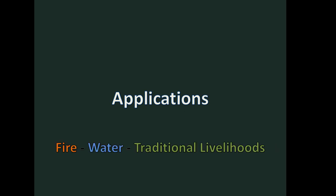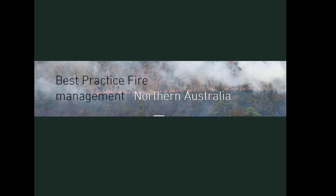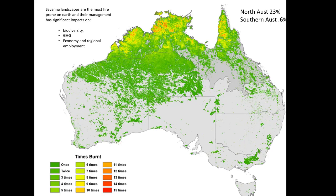I'll now talk about applications of this work — fire management, hydrology and water management, and traditional livelihoods. With regard to fire management in Northern Australia: Northern Australia is one of the most fire-prone landscapes on Earth. You can see in this figure that the North is where the majority of fires occur in Australia, and most of Northern Australia is burnt every year or at least every 2–3 years.